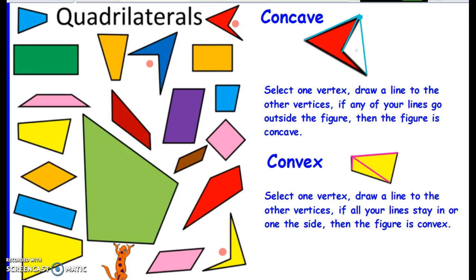We call this little mouth area, if we put a little eye here, think of Pac-Man. Here is the cave. That's the cave part of it. So concave. Okay, so it makes a cave. This line is not part of the quadrilateral.